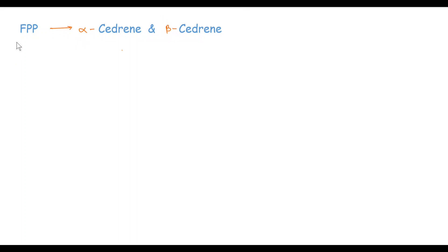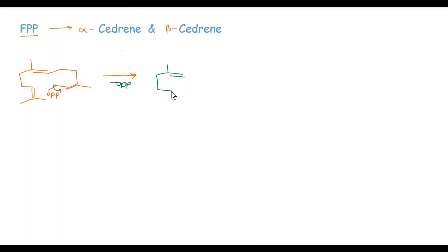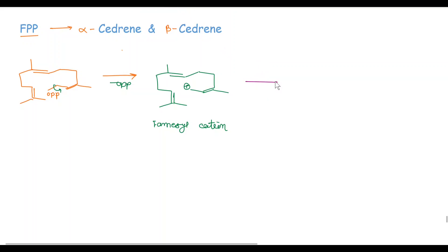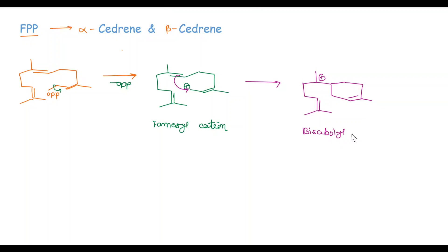Now we will see the biogenesis of alpha-selinene and beta-selinene from FPP. In the first step, loss of OPP takes place from FPP, and we get the farnesyl cation. In the next step, this double bond attacks on this carbocation, and we get here a double bond plus CH3 and here a positive charge. This is known as the bisabolyl cation.